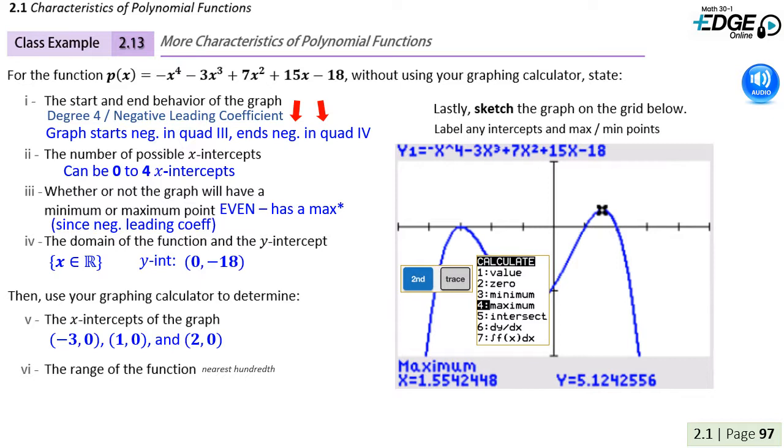Now, in order to find the maximum height of the graph, you just have to understand that it is a maximum. Once we've done that, it's second calc option 4, and put the cursor left of and right of the maximum point. So here we would report our range as being all values of y less than or equal to 5.12, and that y is an element of the real numbers.